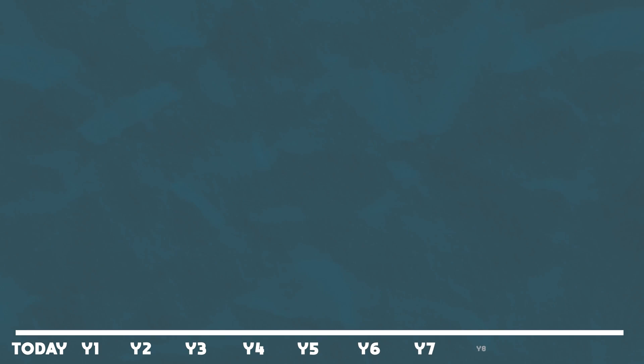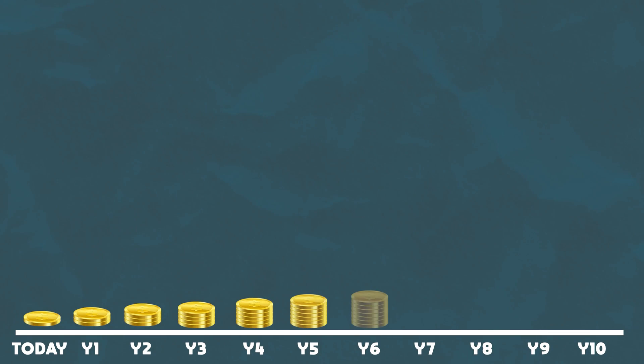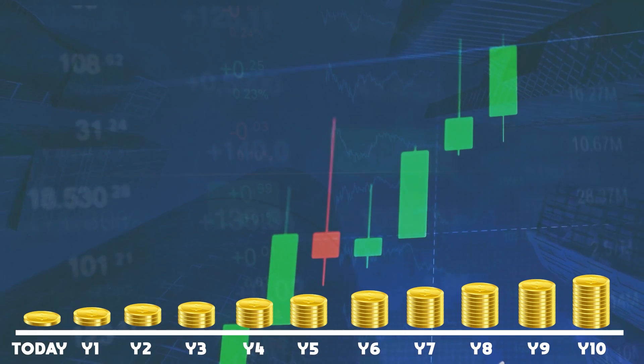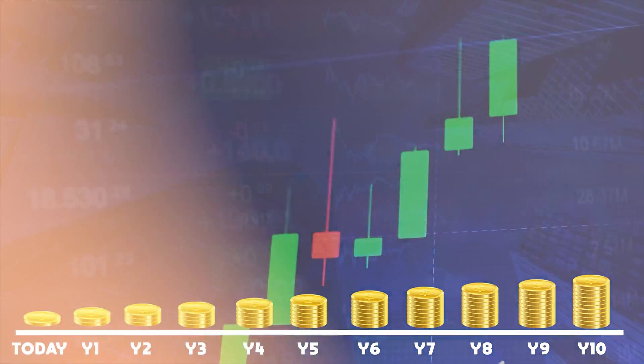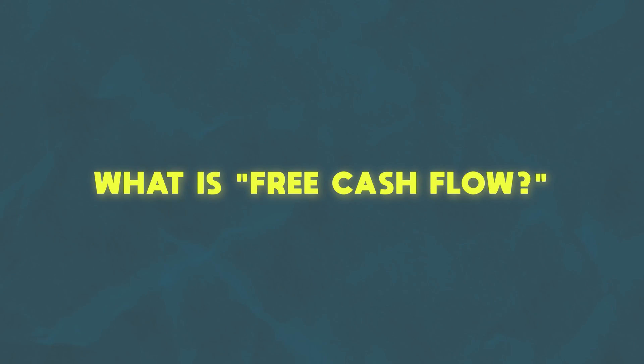When you're actually doing a DCF, you will typically project out the free cash flow of the business for the next five to ten years. You want to project out the cash flows until the business reaches steady state, which means the business is growing at a stable and predictable rate and has become a mature business. You typically don't want to go more than ten years because the further out you have to make projections, the harder it becomes to be accurate.